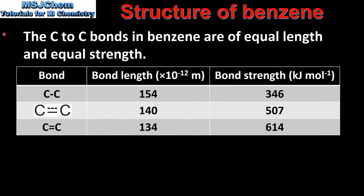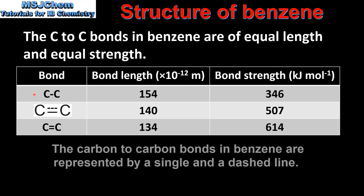We'll start by looking at the carbon to carbon bond lengths and bond strengths, which is physical evidence. The carbon to carbon bonds in benzene are of equal length and equal strength. In this table we have the bond length and bond strength for a carbon to carbon single bond, the carbon to carbon bonds in benzene, and the carbon to carbon double bond. The carbon to carbon bonds in benzene are all the same length — shorter than a carbon to carbon single bond but longer than a carbon to carbon double bond.